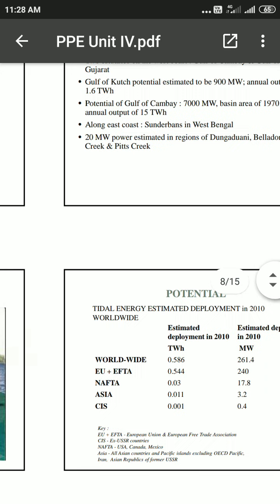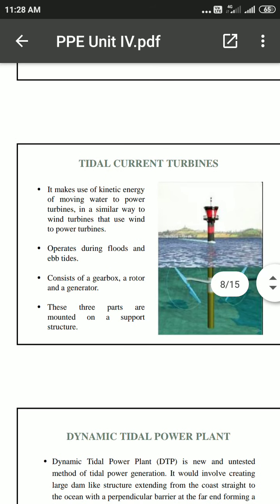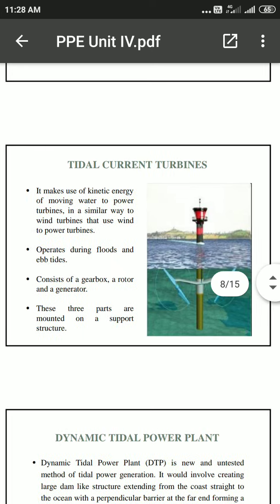Tidal currents are also important. This technology makes use of the kinetic energy of moving water to power turbines, in a similar way to wind turbines that use wind. Tidal current turbines use the tidal water flow to generate power, operating during floods and ebb tides. The components consist of a gearbox, rotor, and generator, all mounted on a support structure.